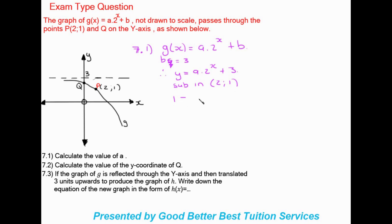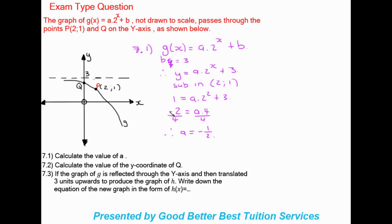Substituting: 1 equals a times 2 to the power of 2, plus 3. Taking the 3 over gives 1 minus 3 equals minus 2, which equals a times 4. Dividing both sides by 4, a equals negative one half. So the final equation is g(x) equals negative one half times 2 to the power of x plus 3.